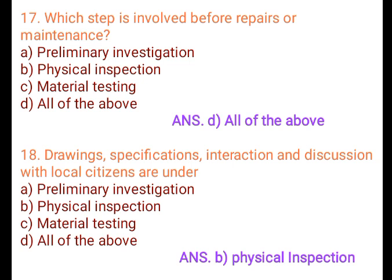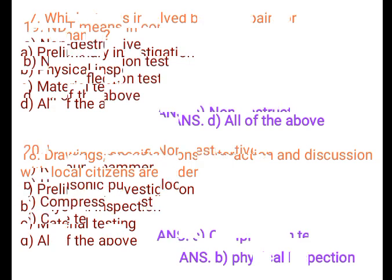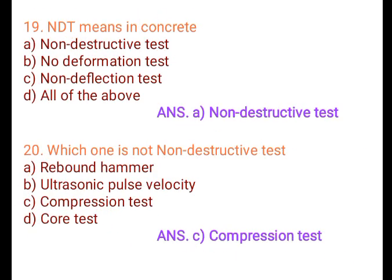Question 18: Drawing specification, interaction and discussion with local citizens are under: A. Primary investigation, B. Physical inspection, C. Material testing, D. All of the above. Answer: B. Physical inspection.